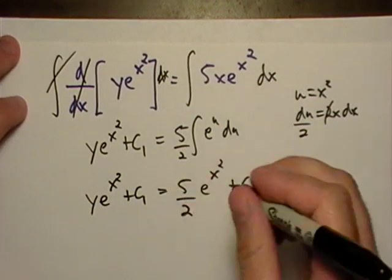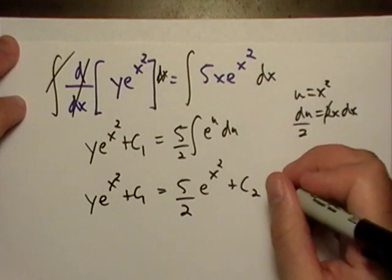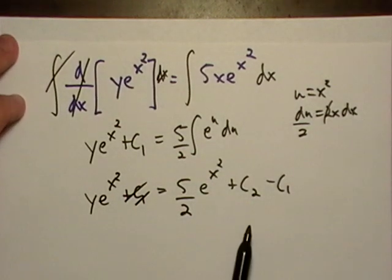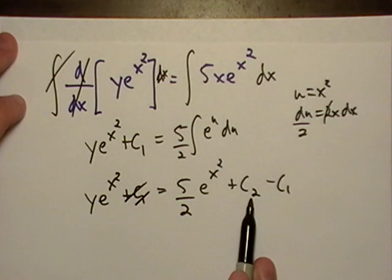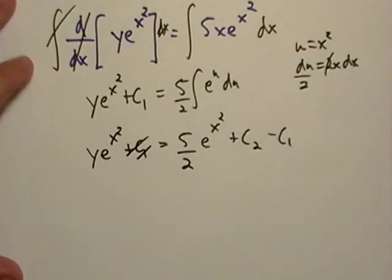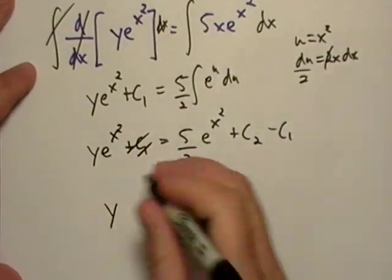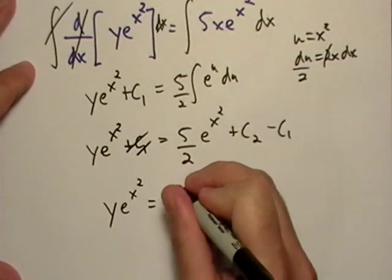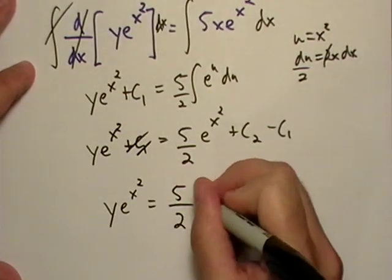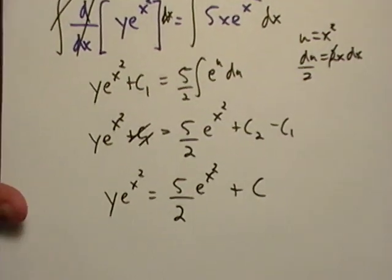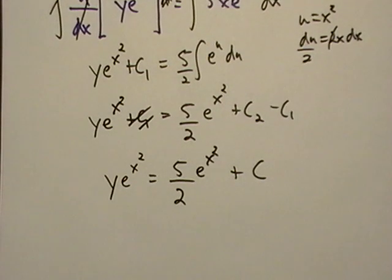Okay, so what do I want to do? Next, I want to move this c1 over. So I'll just subtract it from both sides. It'll cancel out. And the next thing I want to, I mean, if I have an unknown constant minus another unknown constant, I just get another unknown constant, right? So I got y e to the x squared. And that's equal to 5 halves e to the x squared. And we'll just say plus c.